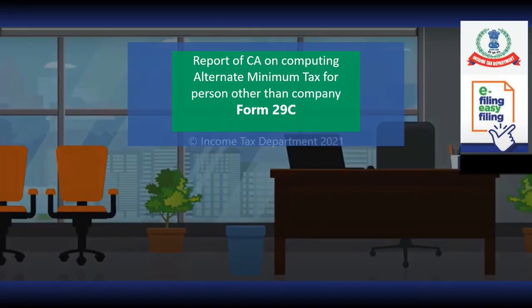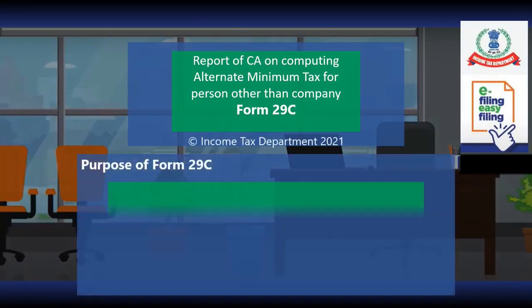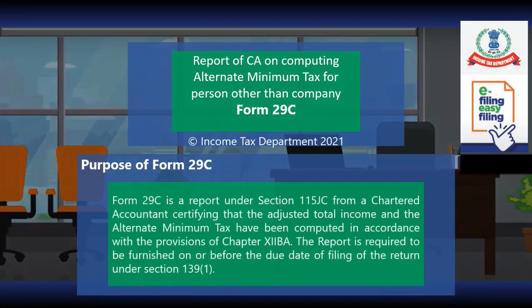This video is on Form 29C, which is a report of a Chartered Accountant on computing alternate minimum tax for persons other than a company. Form 29C is a report under Section 115JC from a Chartered Accountant certifying that the adjusted total income and the alternate minimum tax have been computed in accordance with the provisions of Chapter 12BA. The report is required to be furnished on or before the due date of filing the return under Section 139(1).